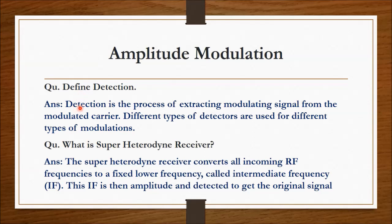The next question on amplitude modulation practical is: define detection. Detection is the process of extracting the modulating signal from the modulated carrier. Different types of detectors are used for different types of modulations.